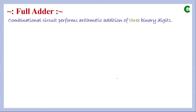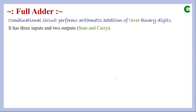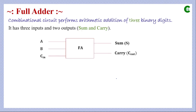A full adder is a combinational circuit which performs arithmetic addition of three binary digits. That means a full adder has three inputs and two outputs: sum and carry. In the block diagram we have three inputs A, B, and C-in, where C-in is the carry input which could be the carry output of the previous adder.